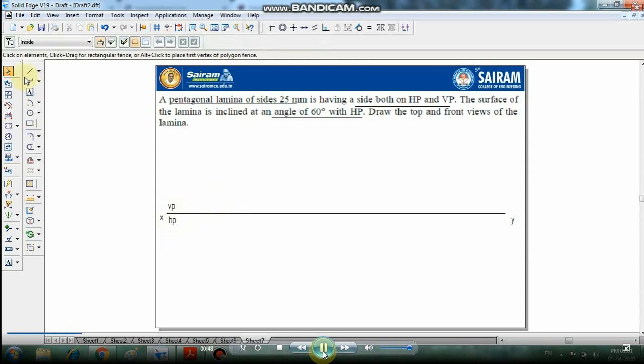A pentagonal lamina 25 mm, pentagon has 5 sides, 360 by 5 gives 72 degrees. First draw 25 with 0 degree, then 25 with 72, 25 with 144, 25 with 216, 25 with 288. Now it's closed, a pentagon.